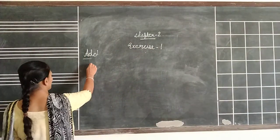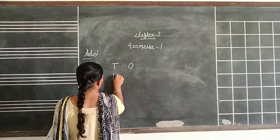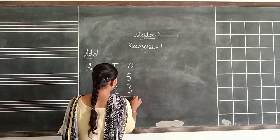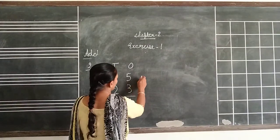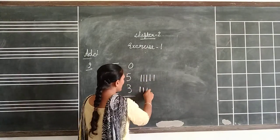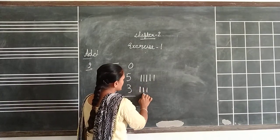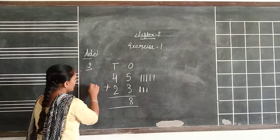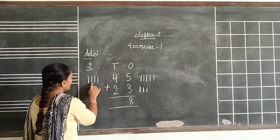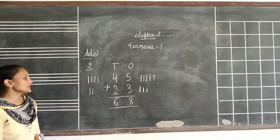Next, second question. 45 plus 23. In the ones place we have 5, so draw 5: 1, 2, 3, 4, 5. Then 3: 1, 2, 3. Count them together: 1, 2, 3, 4, 5, 6, 7, 8. In the tens place we have 4: 1, 2, 3, 4. Then 2: 1, 2. Count together: 1, 2, 3, 4, 5, 6. The answer is 68.